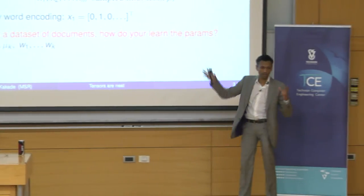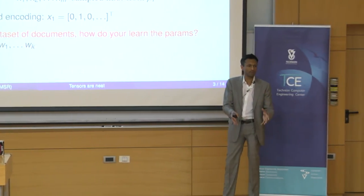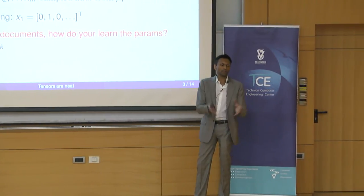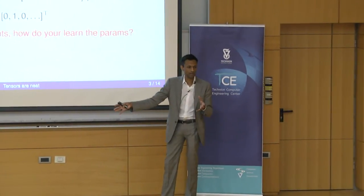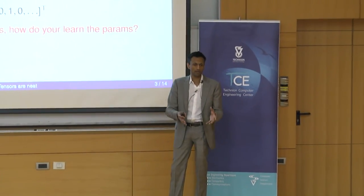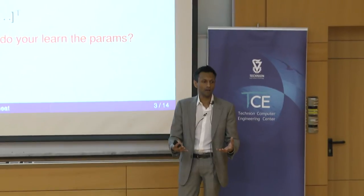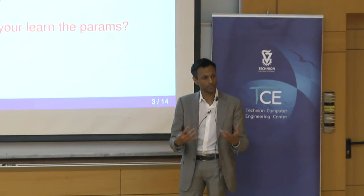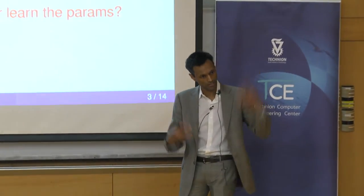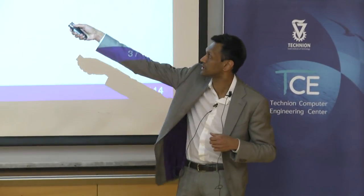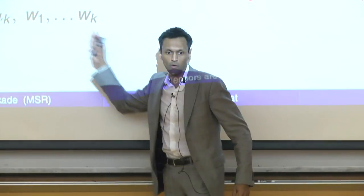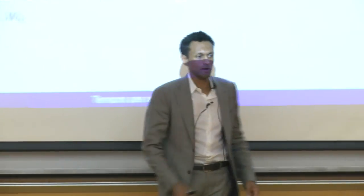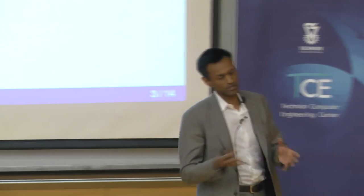Here's the problem: I'm going to give you a set of documents, tell you every document was generated according to one hidden topic, and say: tell me what these distributions are — tell me what the mu's are. Once you have that, it's easy enough to figure out the weights w_i, which are just the probability of each topic.